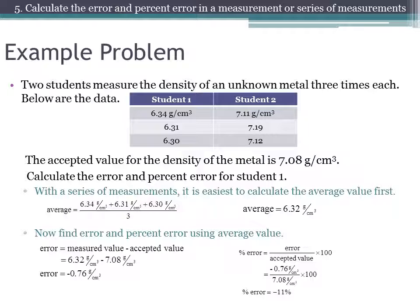A question you might be wondering: what is a good percent error? That is really hard to say. Some measurements are harder to take than others, so in one case a 5% error might be very good, while in another case it might be very poor because the measurement was easy to take. The only thing we can say for sure is the closer to 0% error you get, the better the measurement is.